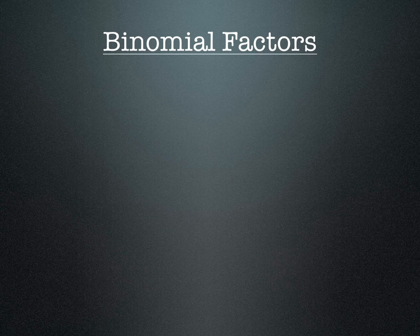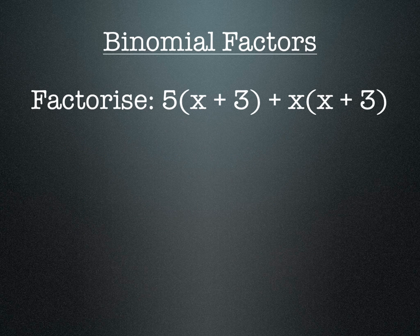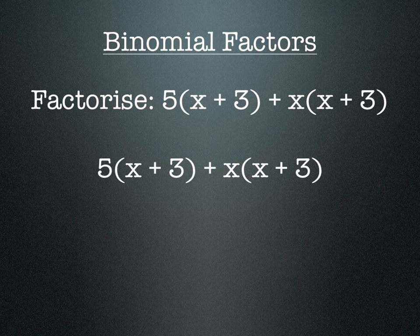Binomial factors look kind of scary, but they're really not that different. Binomial factors are factors that have two parts to them, like a bicycle has two wheels. Here the binomial factors are (x + 3) because you can see that (x + 3) is in both terms. We identify (x + 3) as the common factor, so (x + 3) goes out the front of the brackets.